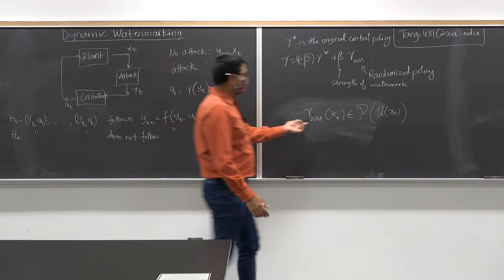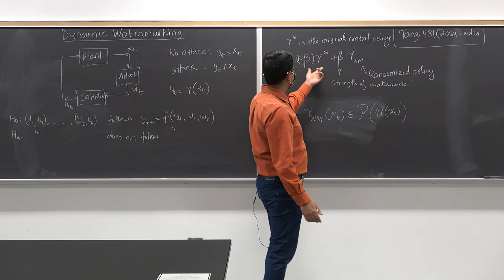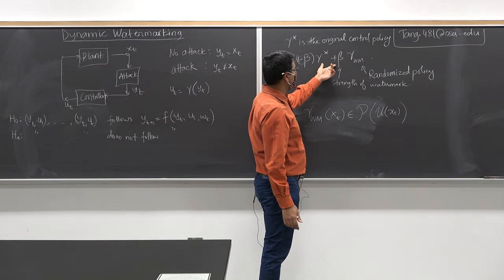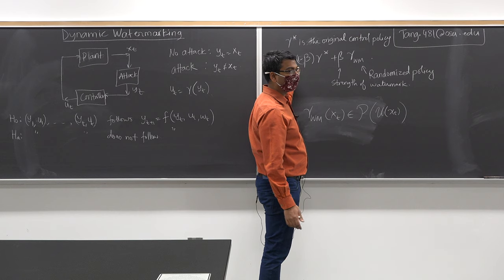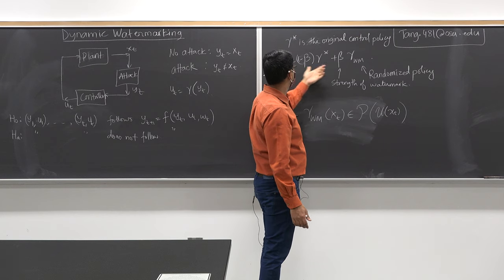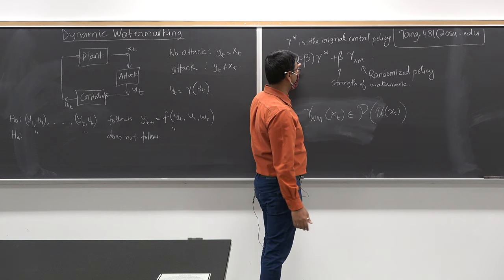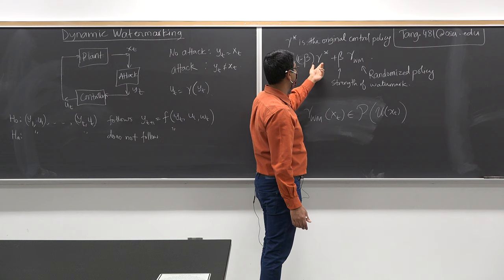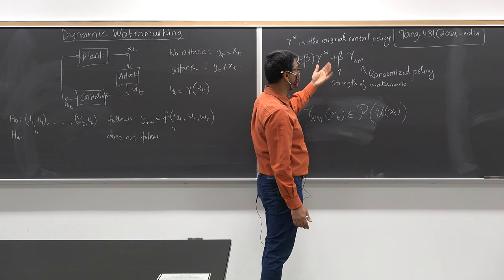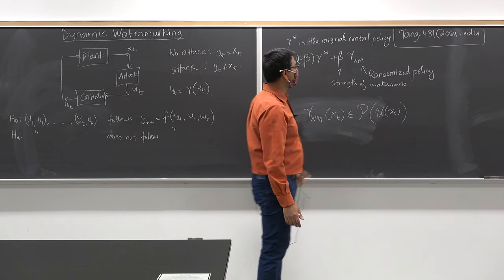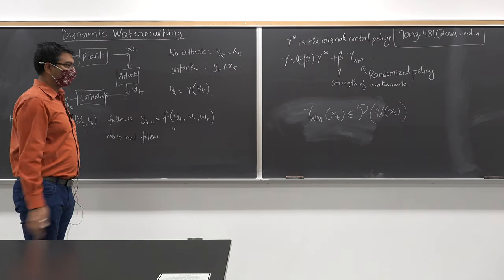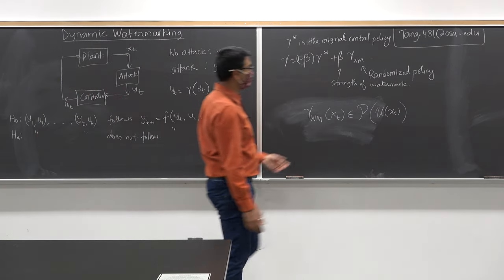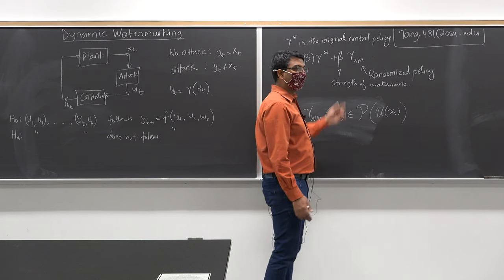If you take a convex combination of two randomized policies, you get a randomized policy. This gamma is a randomized policy because you are taking a deterministic policy — which is a trivial randomized policy — combined with a truly randomized policy that has some probability distribution over the action set.